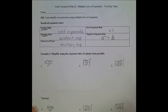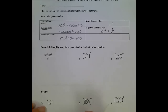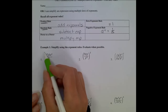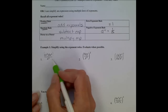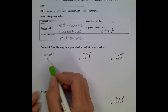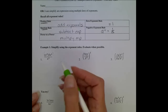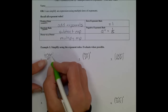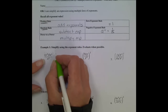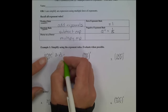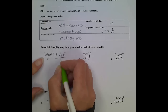Number one: simplify using the exponent rules, evaluate when possible. Whenever you have a fraction, there are implied parentheses around the numerator and the denominator, meaning you really need to simplify your numerator and then your denominator before you worry about reducing. So I'm going to first look at only the numerator as my problem and rewrite it, grouping my terms together: three by itself, times x squared, times x squared, all over x to the third.